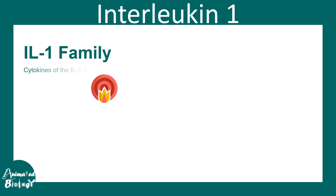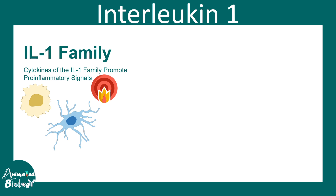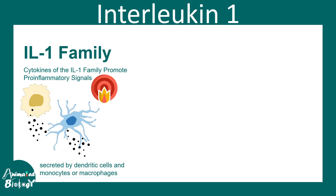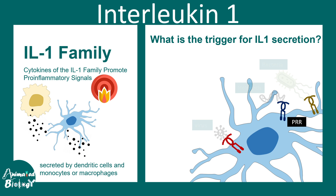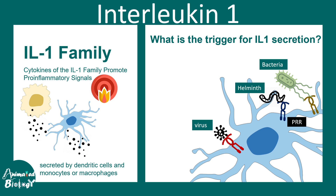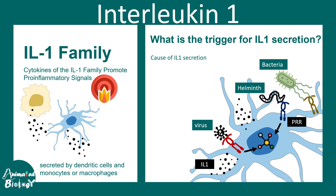The interleukin 1 family has several members, but IL-1 alpha and beta are the most prominent. Most interleukin 1 family members are known for their pro-inflammatory roles. Generally, cells like macrophages and dendritic cells secrete interleukin 1 family cytokines. The major trigger for IL-1 secretion is infection. Pattern recognition receptors on the surface of dendritic cells and macrophages recognize viruses, helminths, and bacteria, signaling the nucleus to produce these cytokines. So the cause of IL-1 secretion is infection; the consequence is inflammation.